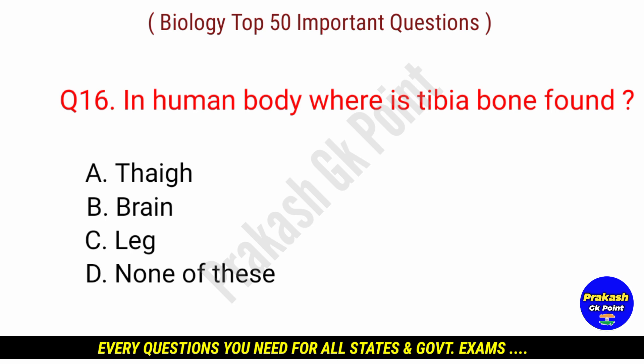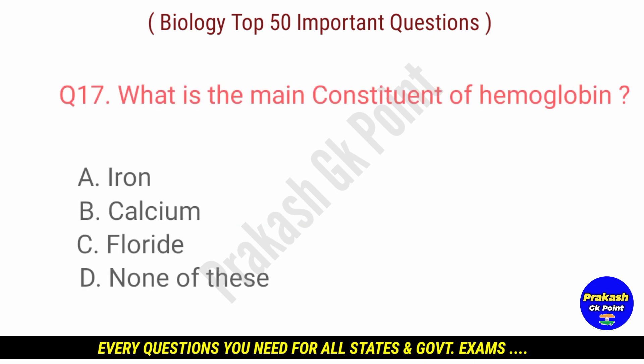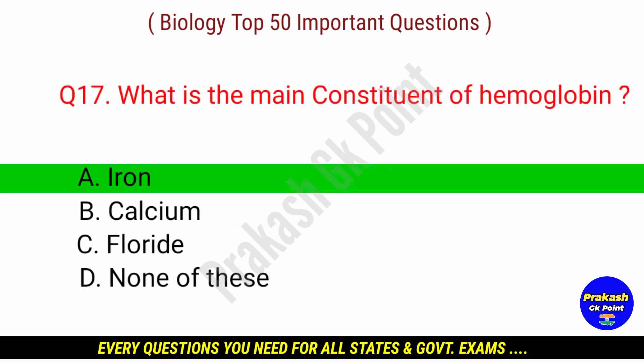Answer: option C — Leg. Next question: what is the main constituent of hemoglobin? Answer: option A — Iron.